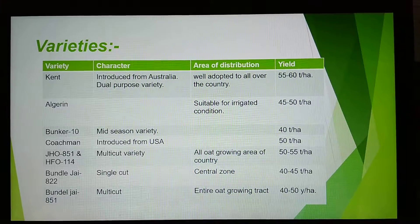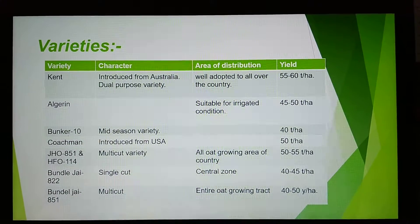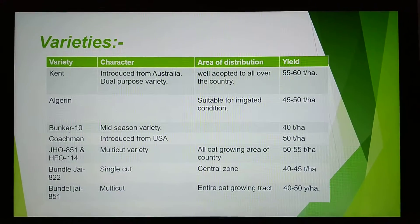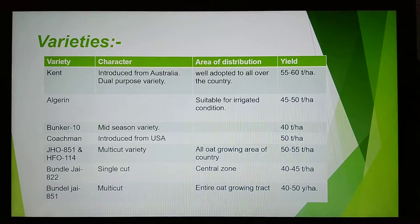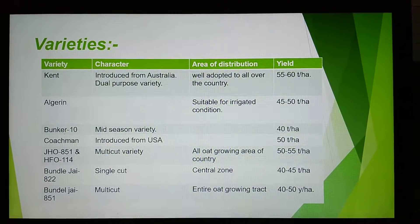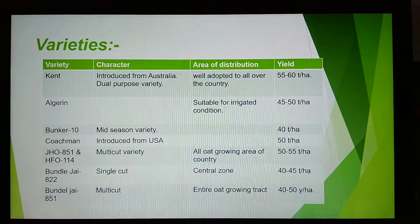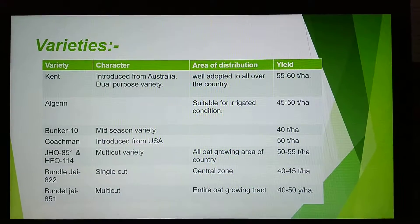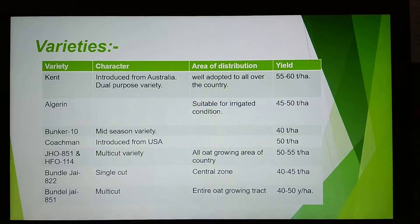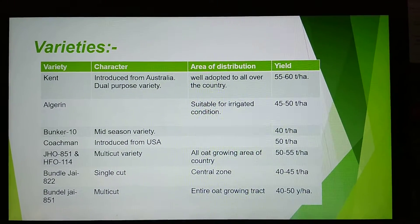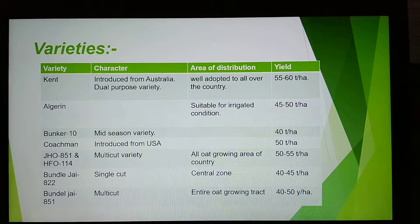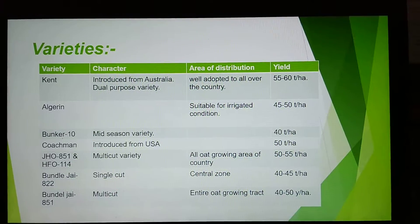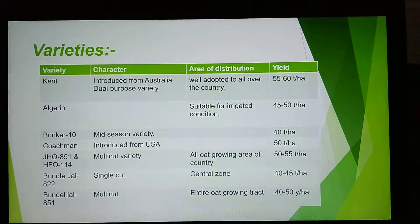Quatchman — introduced from USA, yield 50 tons per hectare. JHO 851 and HFO 114 — multi-cut varieties, yield 55 tons per hectare, grown across the country.